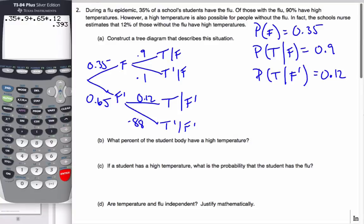So what percent of the students have a high temperature? Well, if I'm only looking specifically for high temperature people, that happens on this part of the branch and on this part of the branch, because they have high temperatures. And so the final probability of having a high temperature is the same as the probability of temperature and flu, plus the people who have a high temperature and no flu.